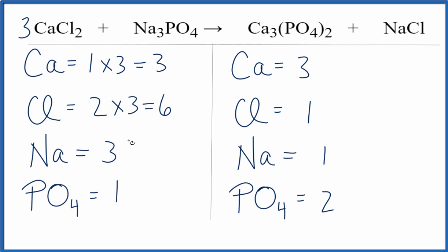Okay, why don't we try to fix the chlorines by putting a six in front of the NaCl. So we have one times six for the sodium, that equals six. Chlorine's one times six, so now the chlorines are balanced.